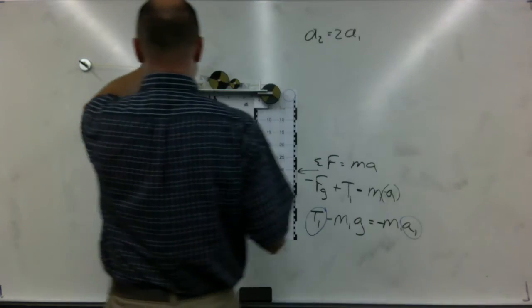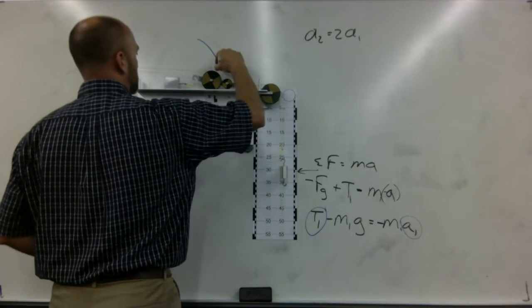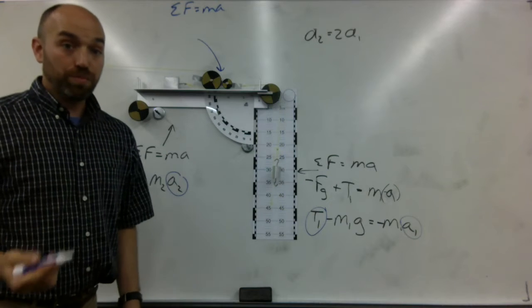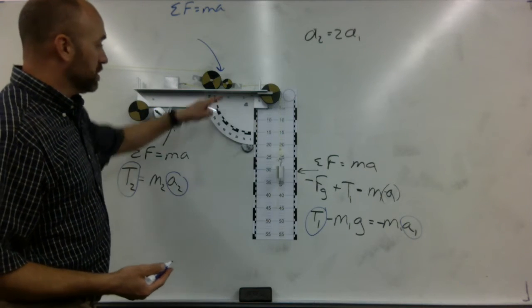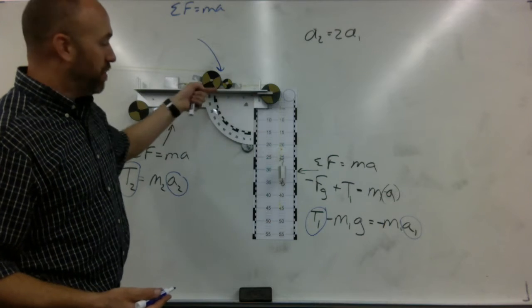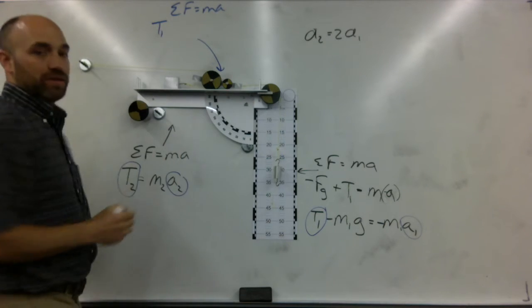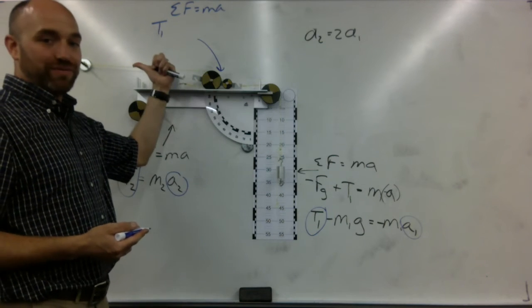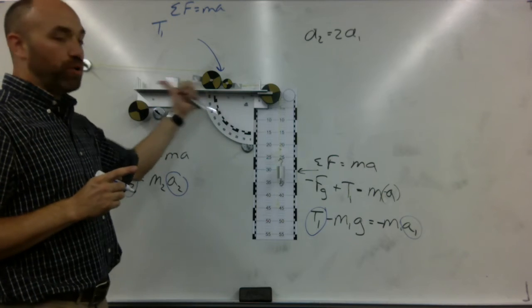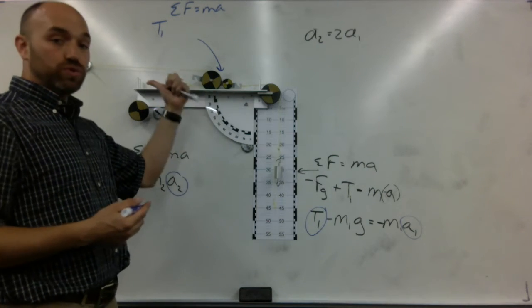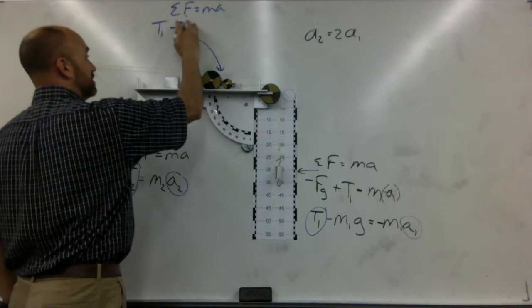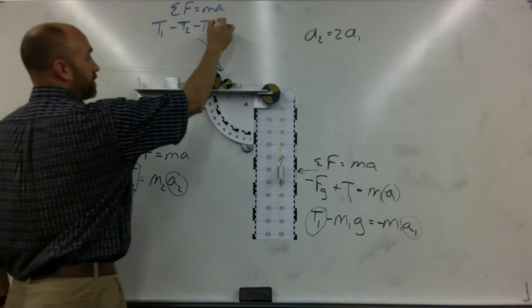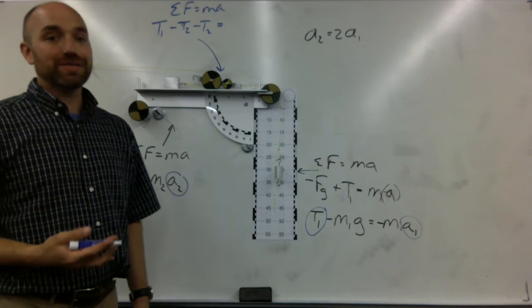So I'm going to write that up here. We'll do sum of the forces equals ma for the pulley. And what are the forces? Well, look at this. On that side, we've got that rope right there. That rope is pulling it to the right. That's t1. And we have this rope pulling it to the left and this rope pulling it to the left. You see how there's two t2s pulling it that way? So we're going to do minus t2 minus t2 equals the mass of the pulley times acceleration.